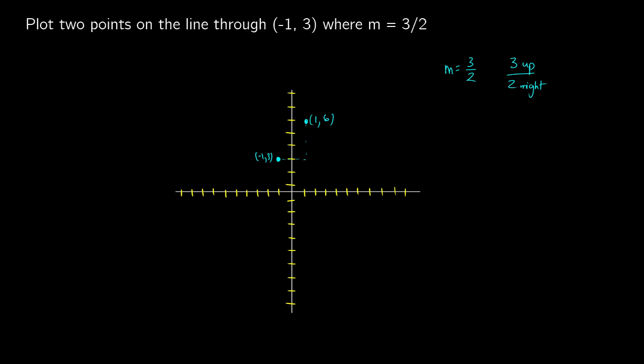We could find another point by going in the other direction — for every 2 x-values to the left, we go down 3. That gives us negative 1 minus 2, which is negative 3, and 3 minus 3, which is 0. So the point is negative 3, 0. Continuing this, we get a nice slope for our line. We could find more points anywhere along the line.